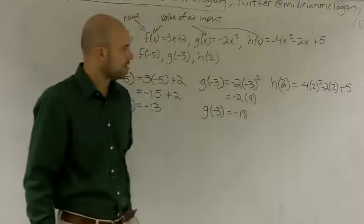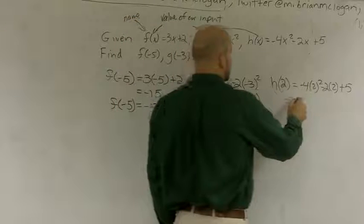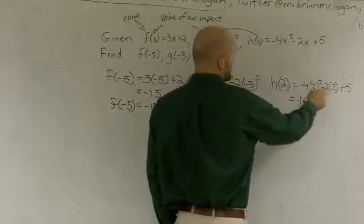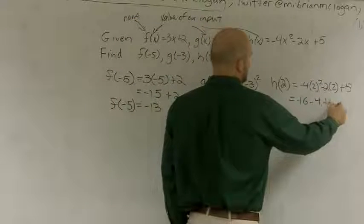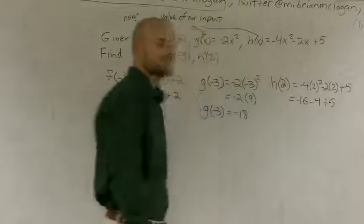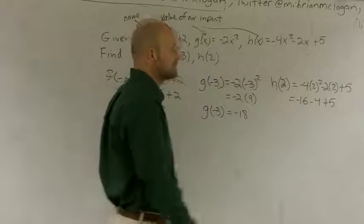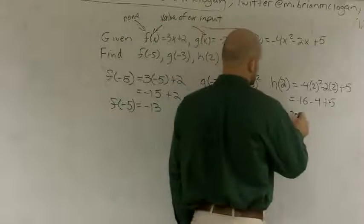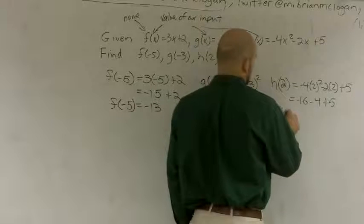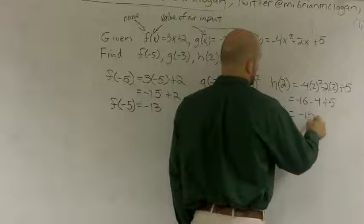Well, 2 squared is 4 times negative 4 is negative 16 minus 4 plus 5. Negative 16 minus 4 is negative 20 plus 5 is negative 15. So I can say h of 2 equals negative 15.